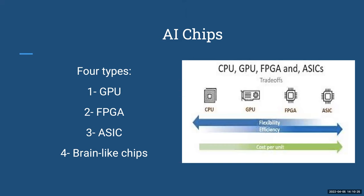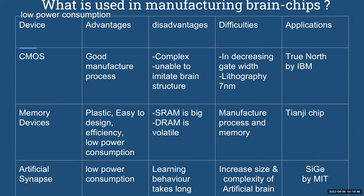There are four types of artificial intelligence chips: GPU, FPGA, ASIC, and brain-like chips, which mimic the human brain structure. Three devices are used to manufacture brain chips: CMOS, memory devices, and artificial synapses. CMOS application is TrueNorth by IBM, which is widely used. Memory devices use the TNG chip, and artificial synapses use CIG by MIT. Although CMOS is widely used in traditional chips, it's not suitable for brain-like structures due to manufacturing process and physical limitations. Artificial synapses will play an essential role in future research due to their low power consumption.